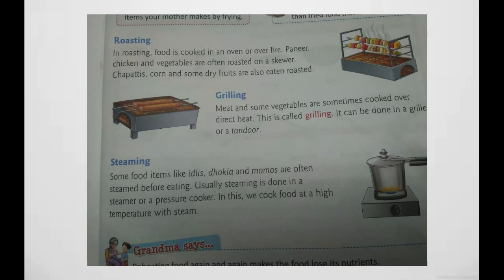Meat and some vegetables are sometimes cooked over direct heat — this is called grilling. Some food items like idlis, dhokla, and momos are often steamed before eating. Steaming is done in a steamer or pressure cooker, where food is cooked at a high temperature with steam. These are the methods of cooking. Thank you.